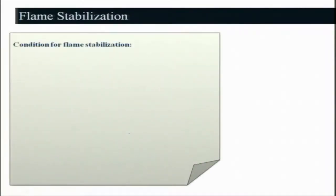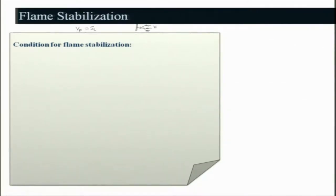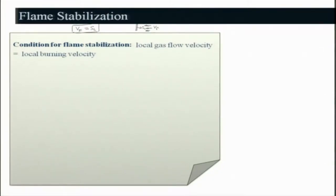Now let us look at flame stabilization. We have already seen that if the local velocity of the fluid equals SL — the local laminar burning velocity — the flame will be stabilized. For example, if the flame is moving with SL and the fluid is moving with velocity V_f, flame stabilization occurs only when V_f equals SL. That means local gas velocity equals local burning velocity — these are all local conditions.